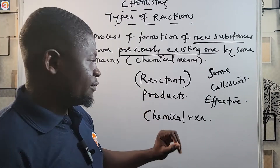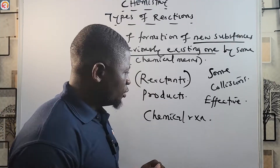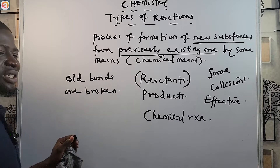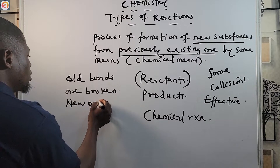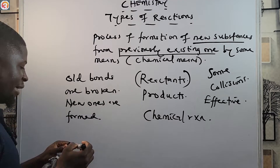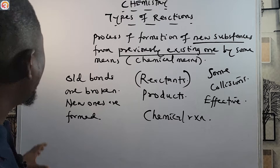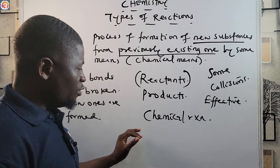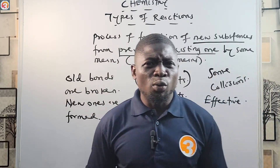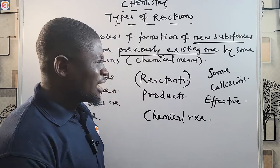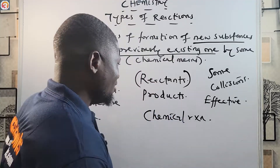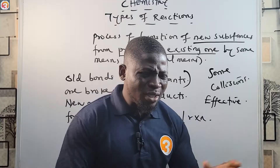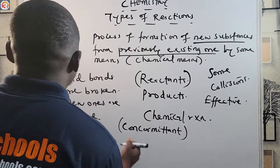Now, during a chemical reaction, old bonds are broken and new ones are formed. Also know that some reactions go in both directions — the reaction can proceed in both directions, meaning the reaction is concomitant. A reaction that is concomitant goes in both directions, and we call this type of reaction a reversible reaction.